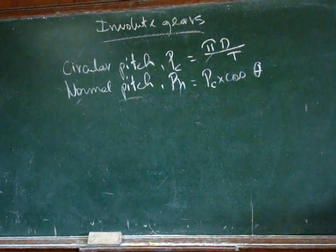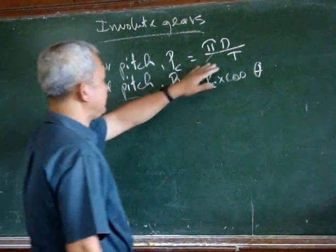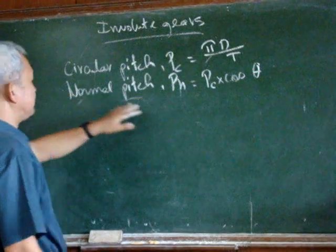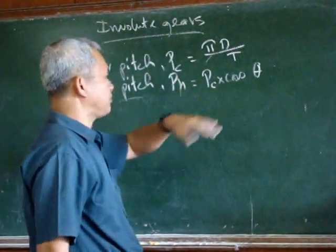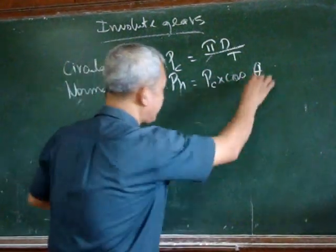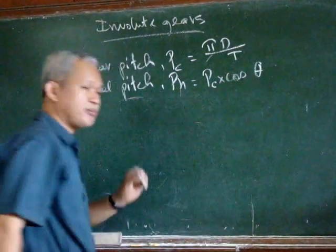So circular pitch is pi D over the number of teeth. And the normal pitch is equal to the circular pitch multiplied by the cosine theta. And we remember the cosine theta is the pressure angle.